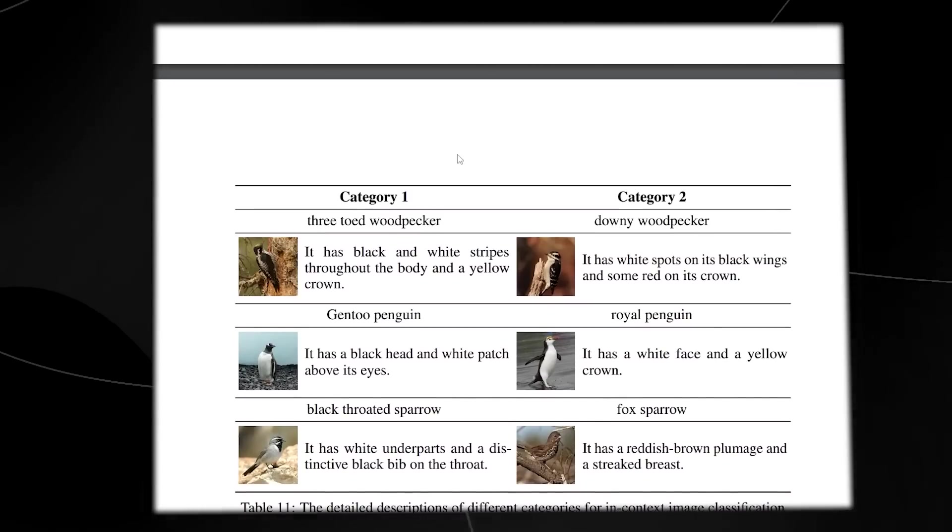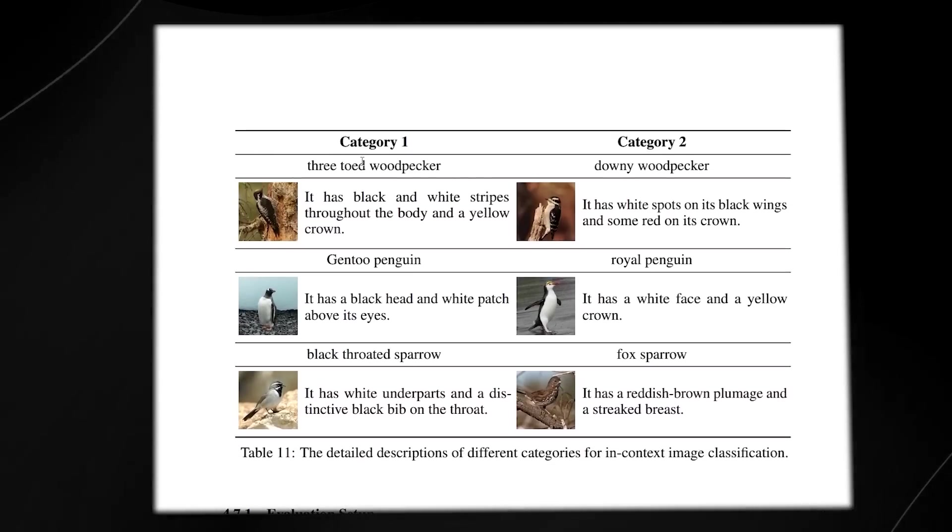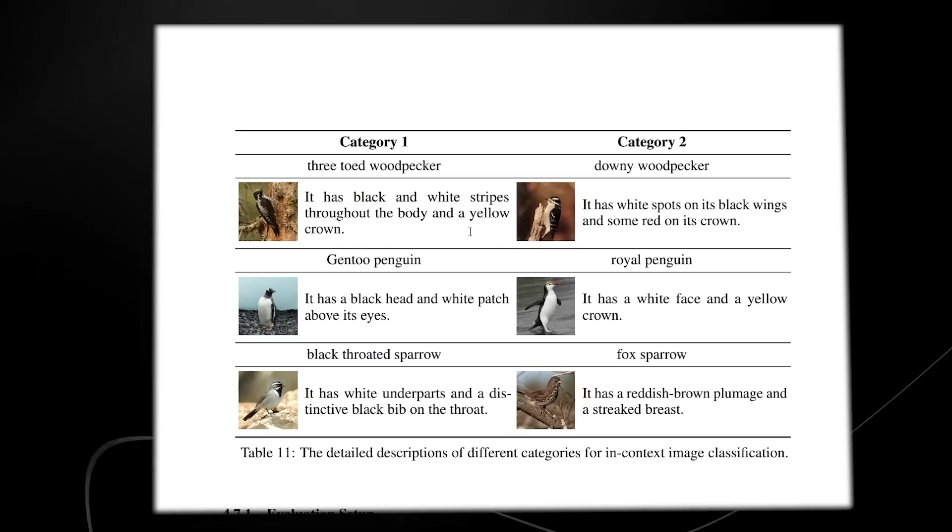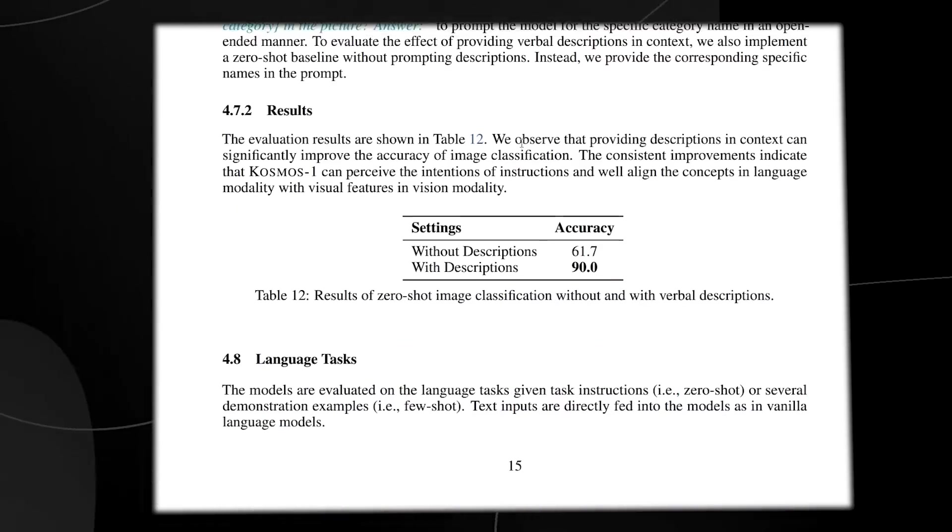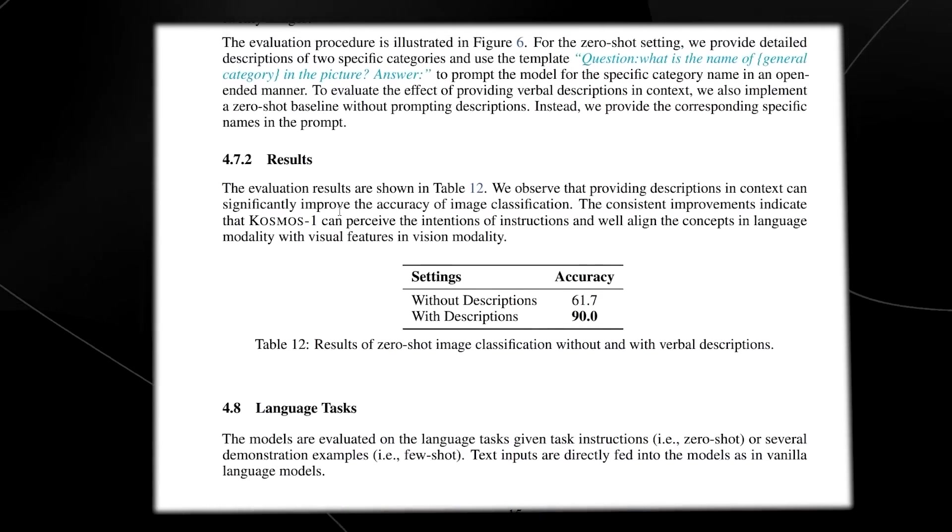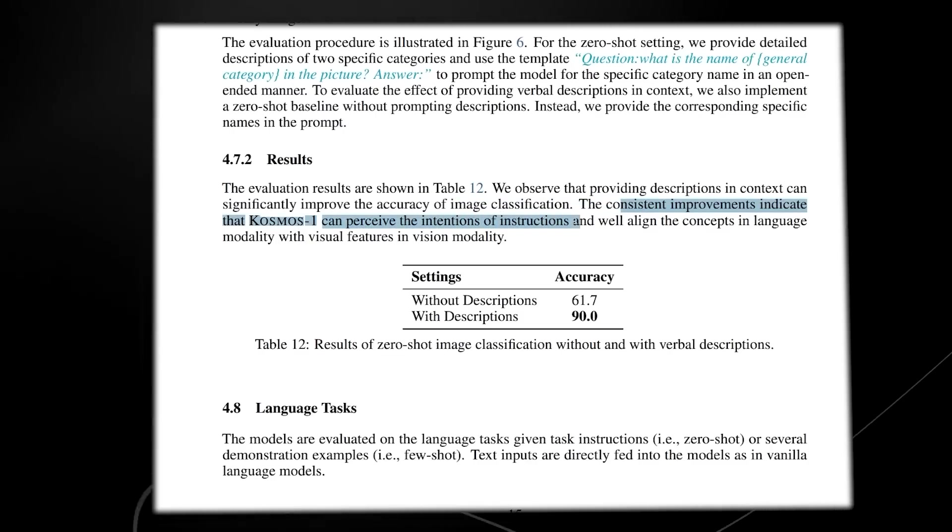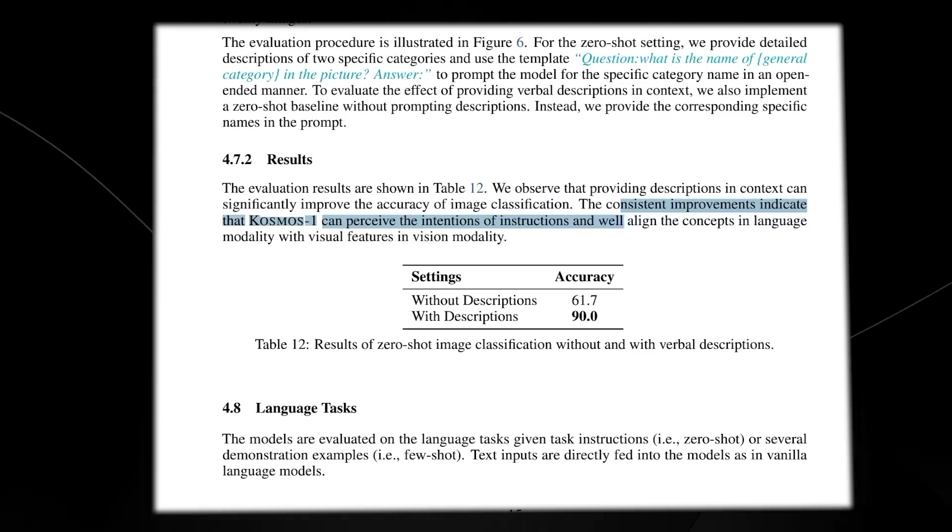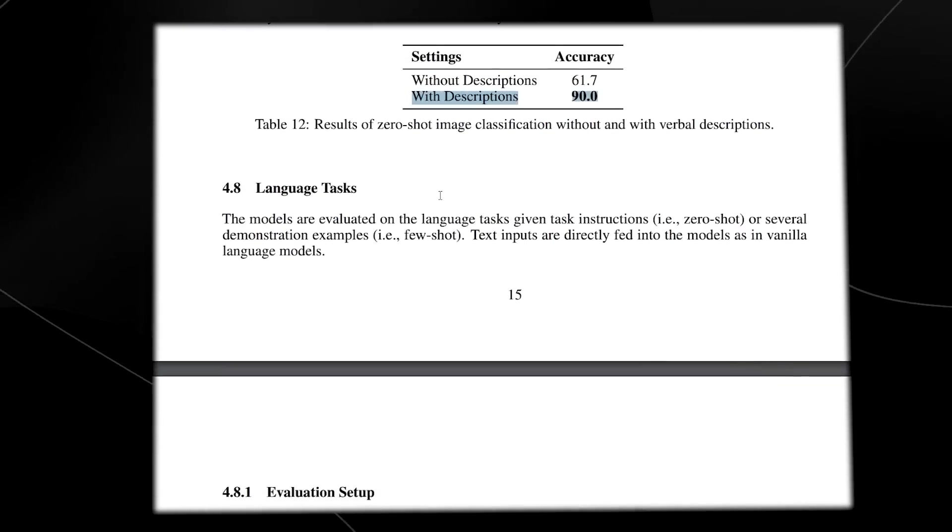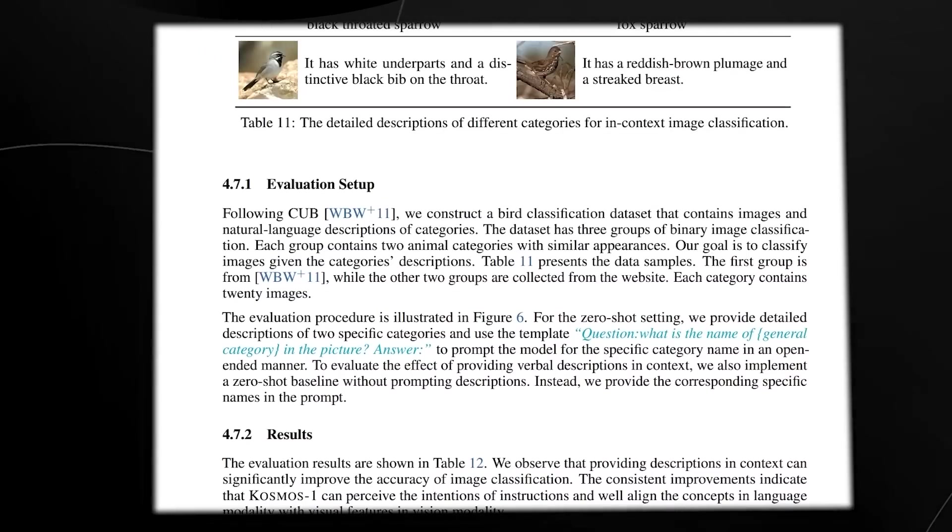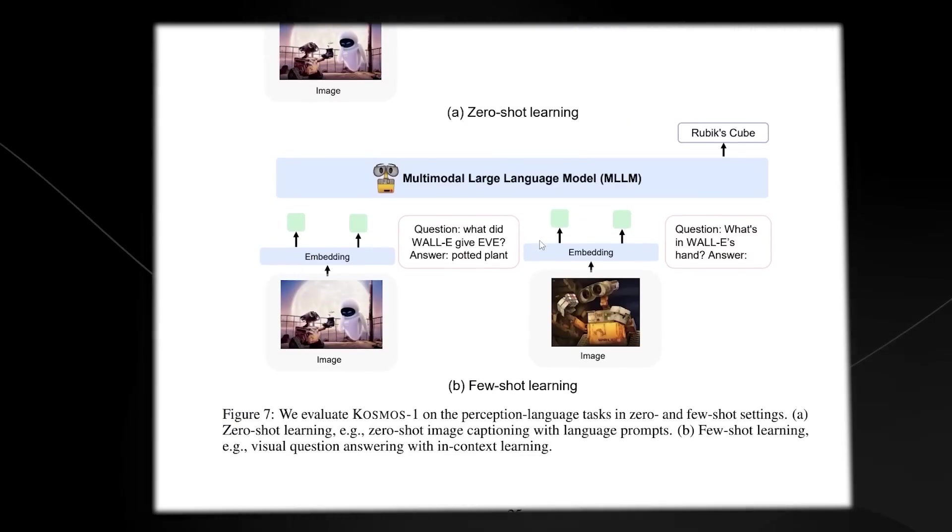You can also see here just exactly how GPT-4 is learning how to differentiate between very similar images. You can see here that there are category ones and category twos of images that are very similar. And it has to be able to understand exactly what image is what image. You can also see here that it says providing descriptions in context can improve the accuracy of image classification. And the consistent improvements indicate that Cosmos 1 can perceive the intentions and the instructions and well align the concepts in language modality with visual features in vision modality. Now, I'll leave a link to this paper in the description.